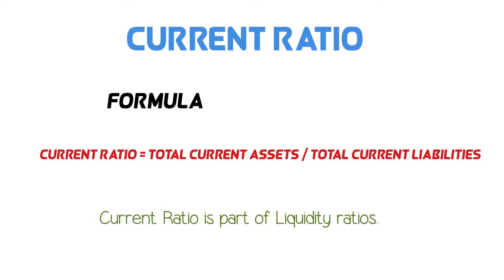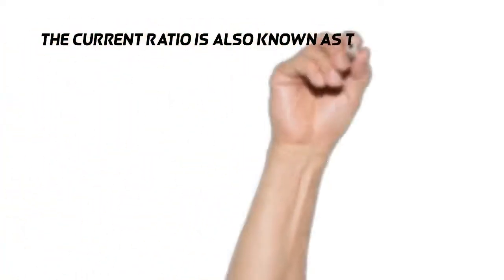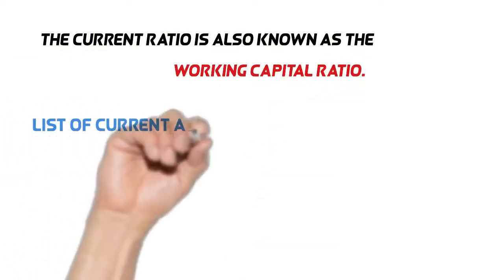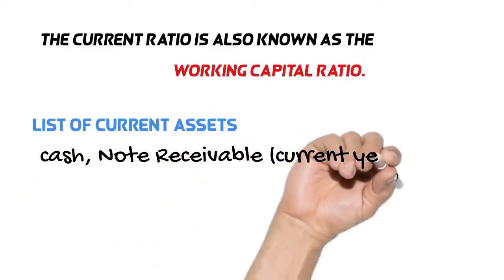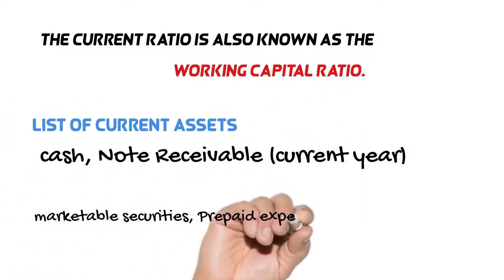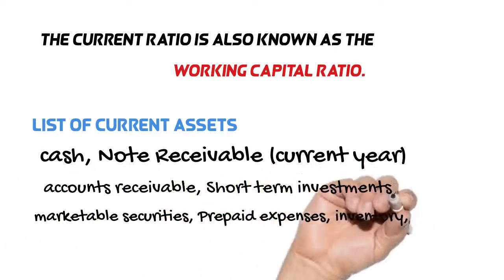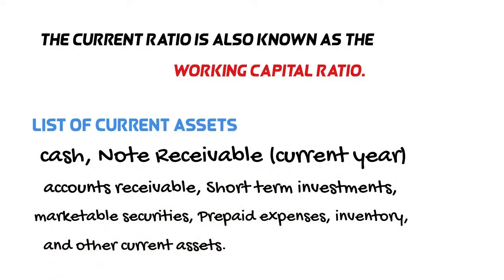The current ratio is also known as the working capital ratio. The current assets vary from company to company. Based on available data, I have provided a few famous lists of current assets and current liabilities. It may be helpful in understanding these concepts.